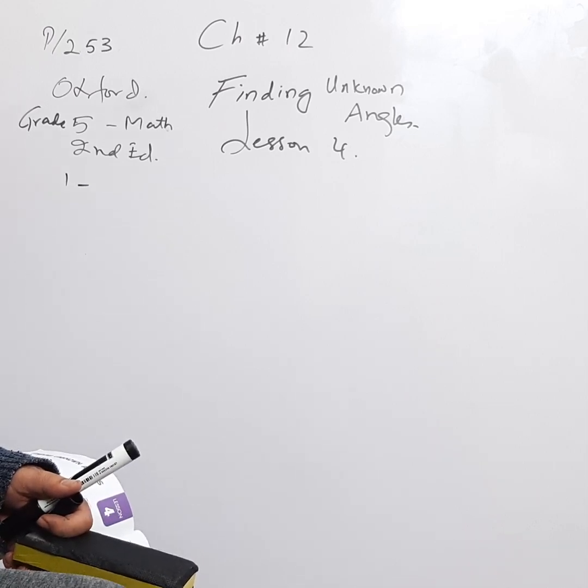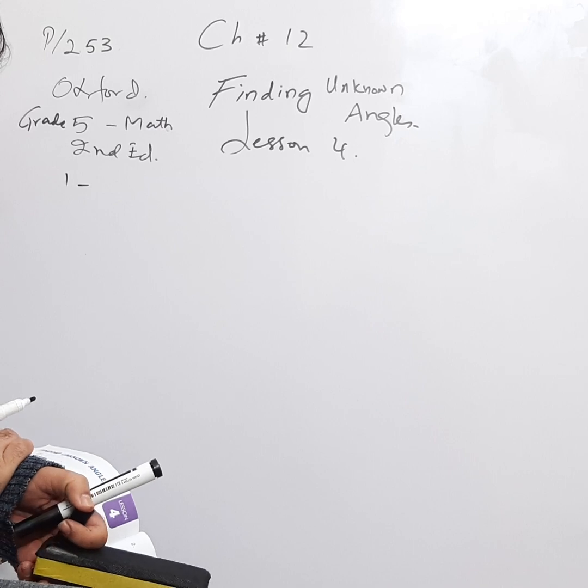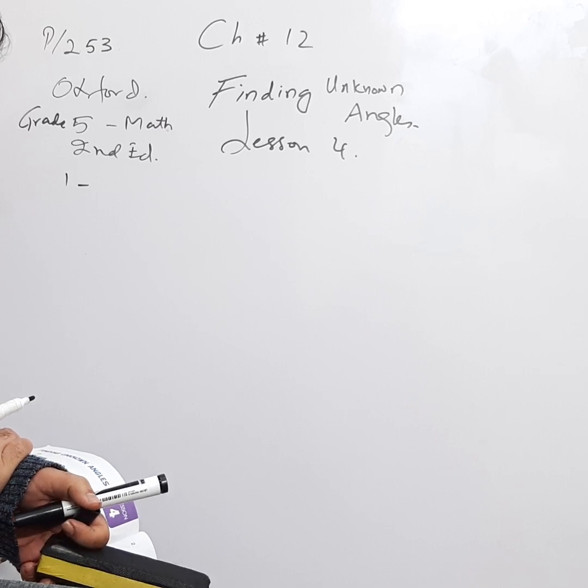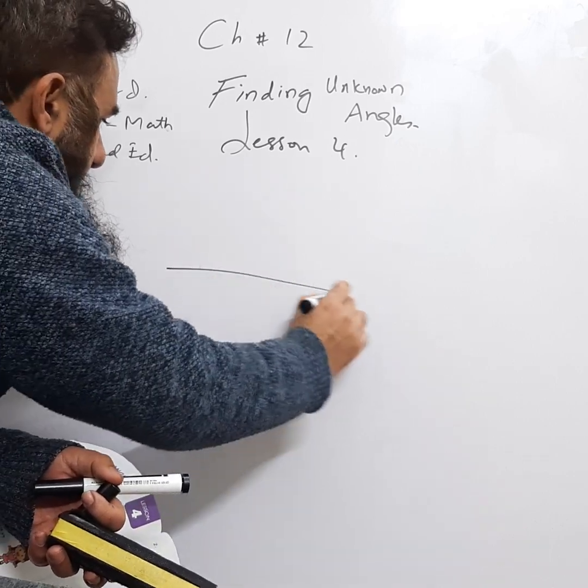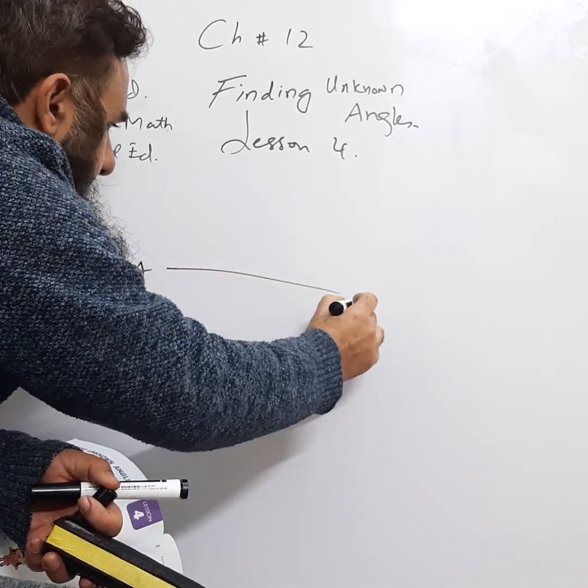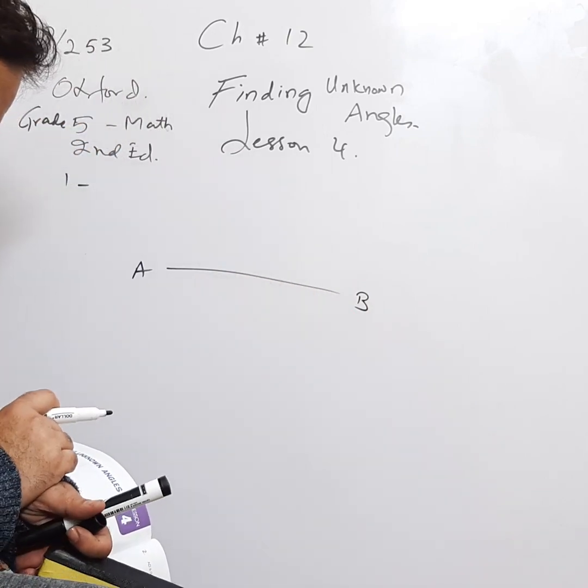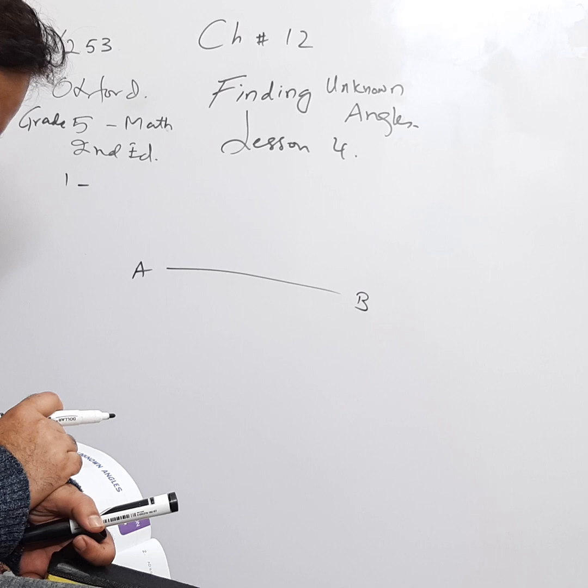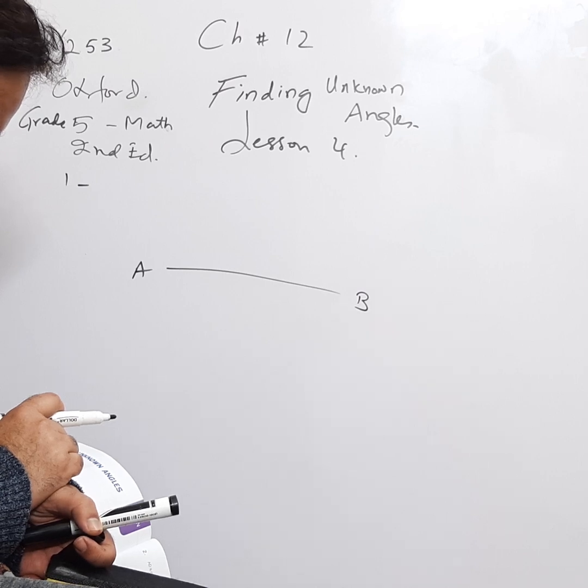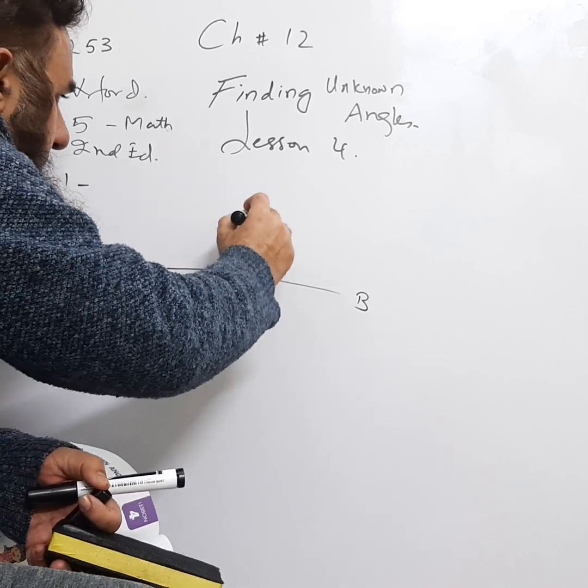First this AB is like this, okay. Then EF is like this.